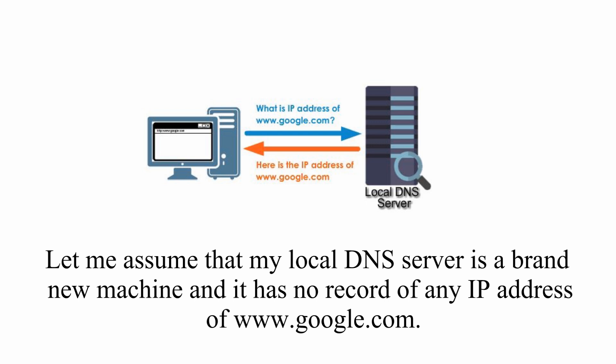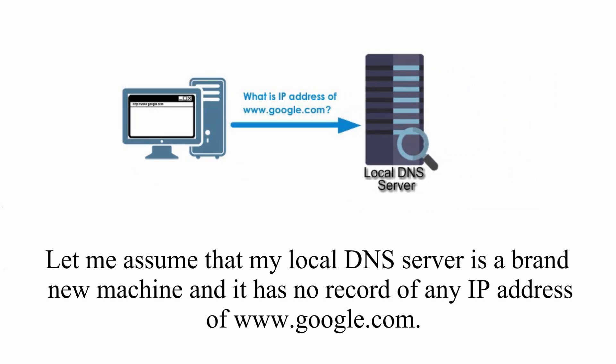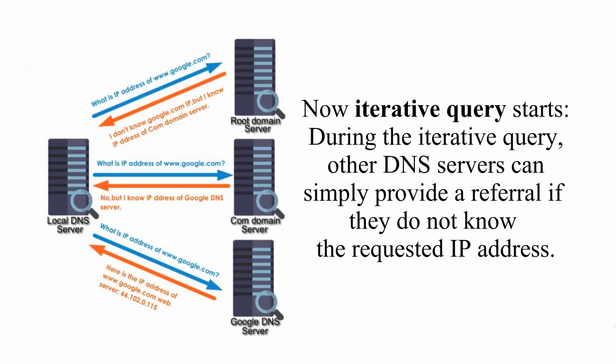Let me assume that my local DNS server is a brand new machine and it has no record of any IP address of www.google.com. It would reply: I'm sorry, I don't know, but I will find it for you, because that's my responsibility. Now the iterative query starts.